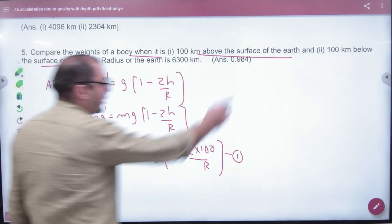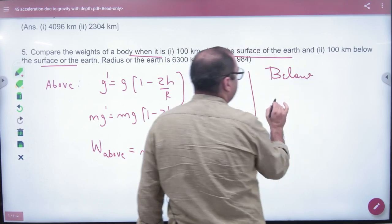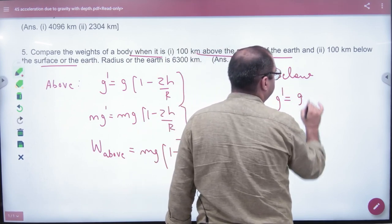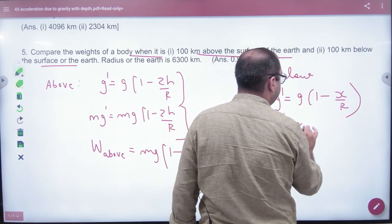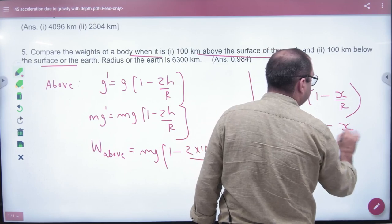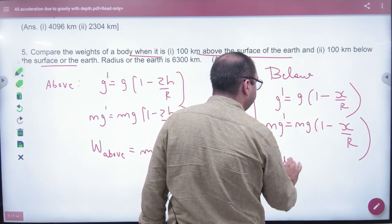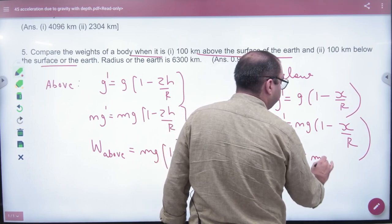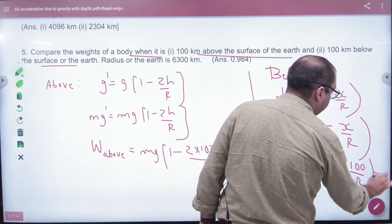Now for below, we use the depth formula g' = g(1 - x/R). Multiply both sides by m. The weight below is mg(1 - 100/R). This is equation number 2.